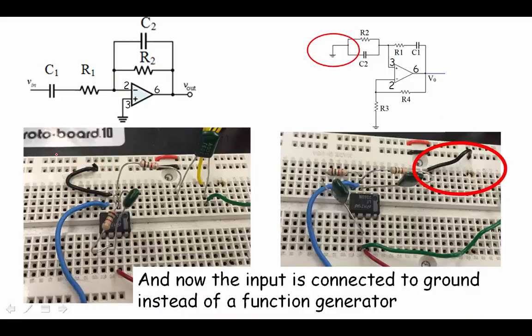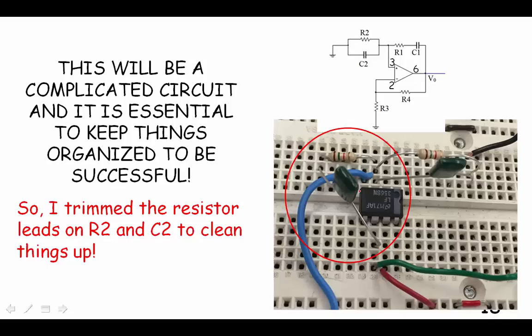We also got rid of this guy. We had a function generator driving our filter and looked at the output. But now we've put a ground on the input. Isn't that odd? But we've got positive feedback, so it's going to oscillate even without an input.